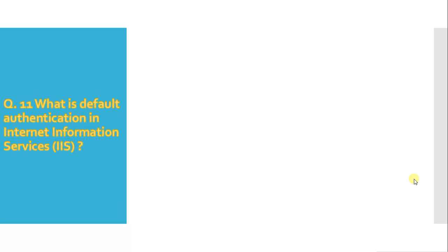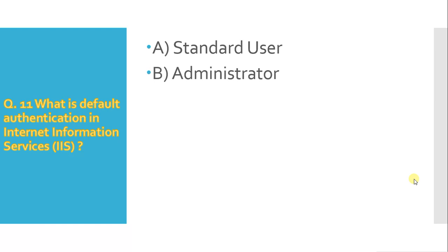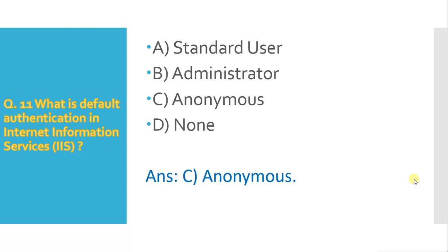Question 11: what is the default authentication in Internet Information Services? Option A is standard user, B is administrator, C is anonymous, D is none. The answer is C, anonymous.